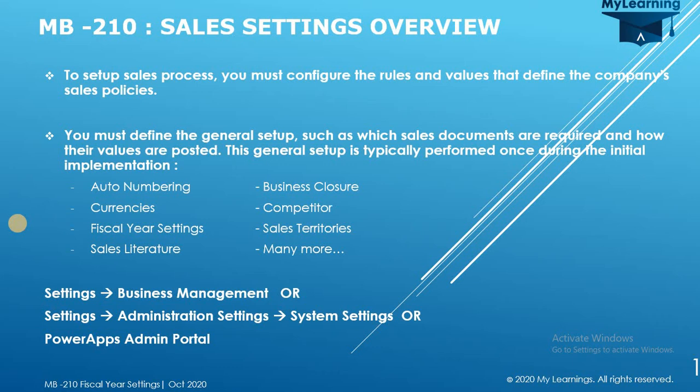Hi everyone, today we are going to look into an overview of share settings. To set up a search process, you must define the general setup, called the search settings. These search settings are typically performed once during the initial implementation. Some of the search settings include auto numbering, currencies, fiscal year settings, sales literature, business closures, competitor search, territories, relationship roles, and share security roles.